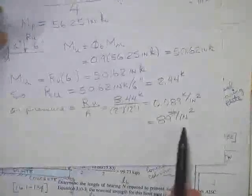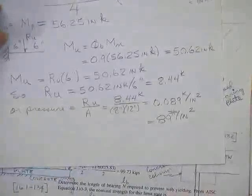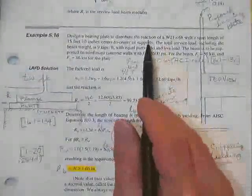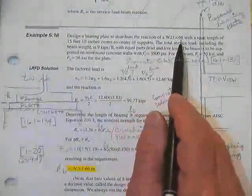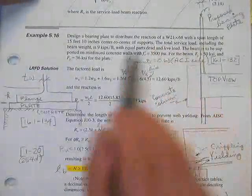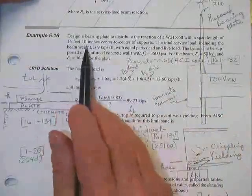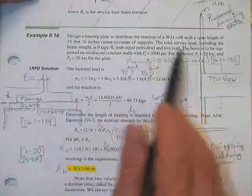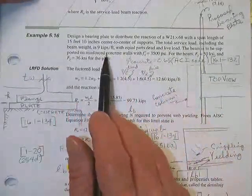Old pop quiz: how much load could you place on a 12-by-8 plate that was 3/4 inch thick? How much uniform load in pounds per square inch? It turned out to be 89 pounds per square inch.